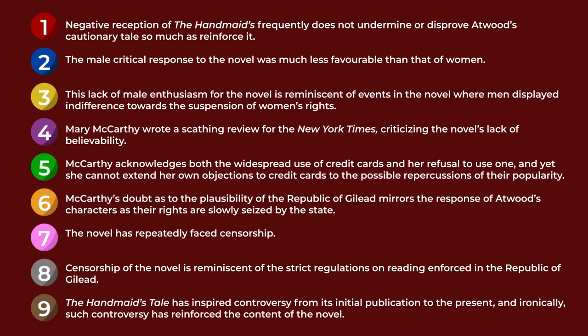In this reverse outline, most of the paragraphs adequately express the point that the essay is trying to communicate, which is that the reception to The Handmaid's Tale strengthens the point made in the novel. Points two and three relate to how negative male reception to the novel mirrors the attitude of men in the story. Points four and six address how doubts that the events in the novel could really happen are similar to the doubt and lack of interest in politics found in the story. Points seven and eight cover censorship of the novel and of books in the story. Point nine restates the thesis. Point five talks about credit cards and does not fit with the rest of the essay, so we should consider revising that paragraph.